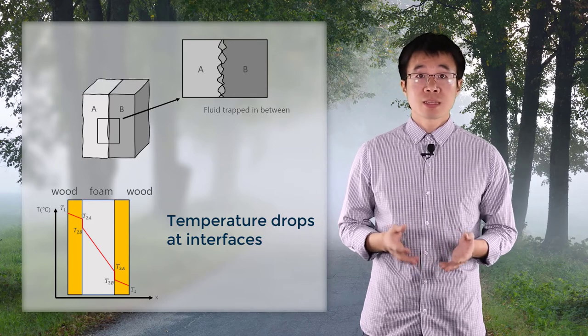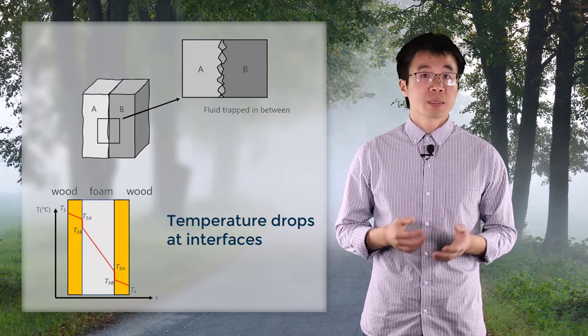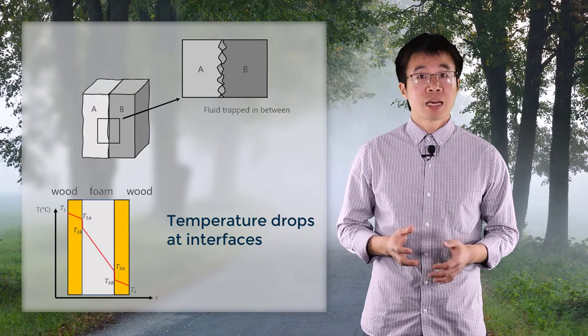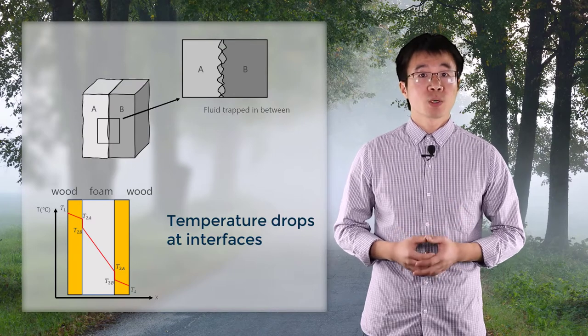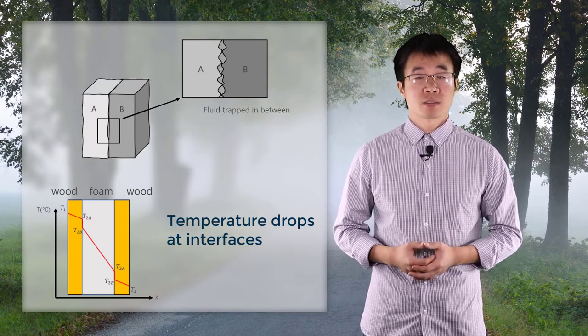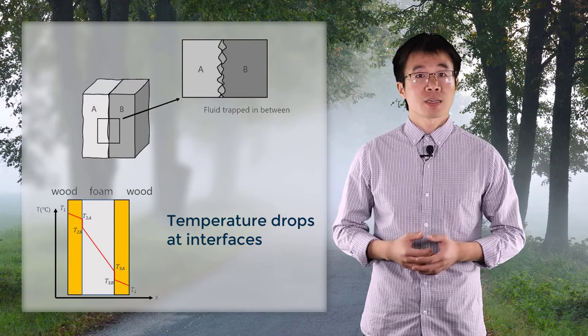Even when they seem to be very smooth, on a microscopic level they can be very bumpy, and it is inevitable to have fluid trapped in pockets, which changes the conductivity.